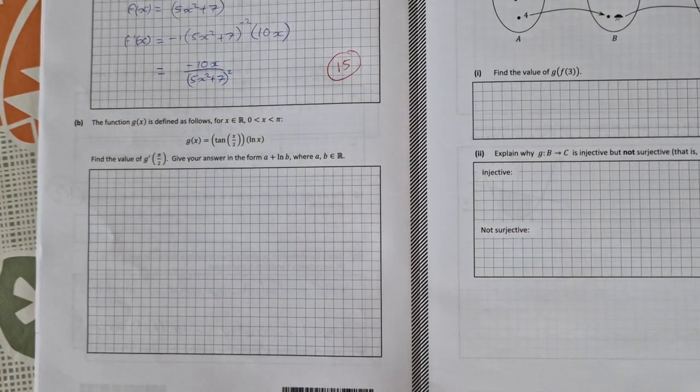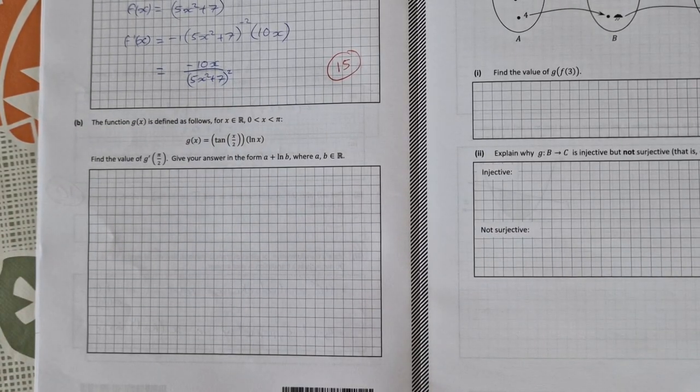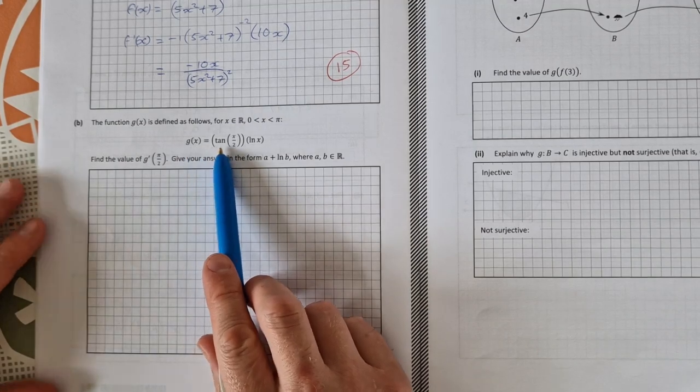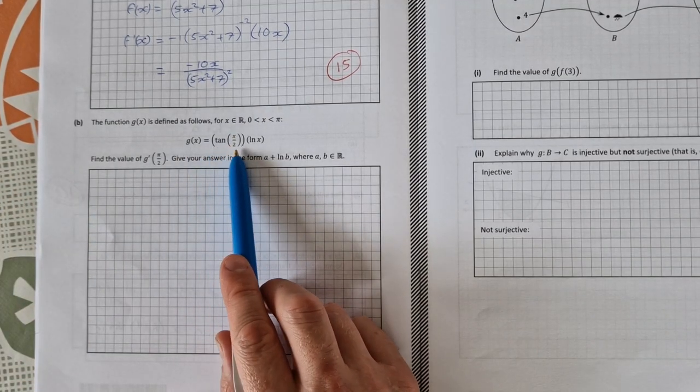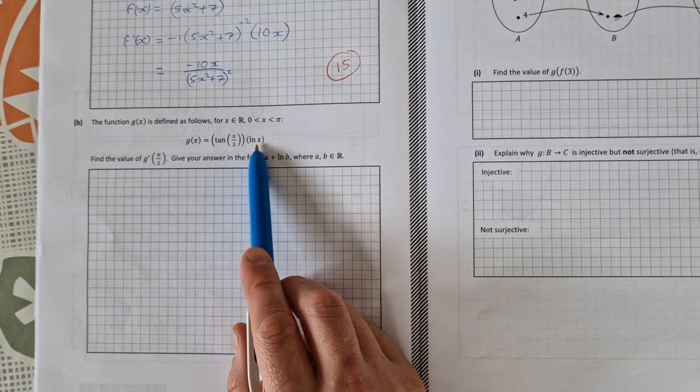Part B is a little bit harder. We're given a new function g of x equals tan of x over 2 times the natural log of x.